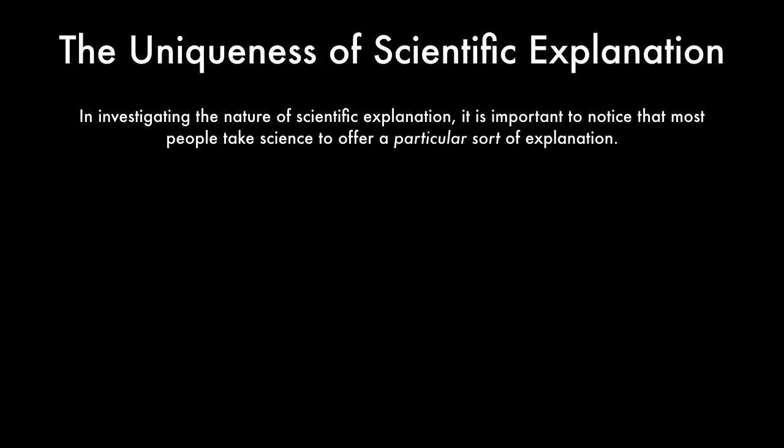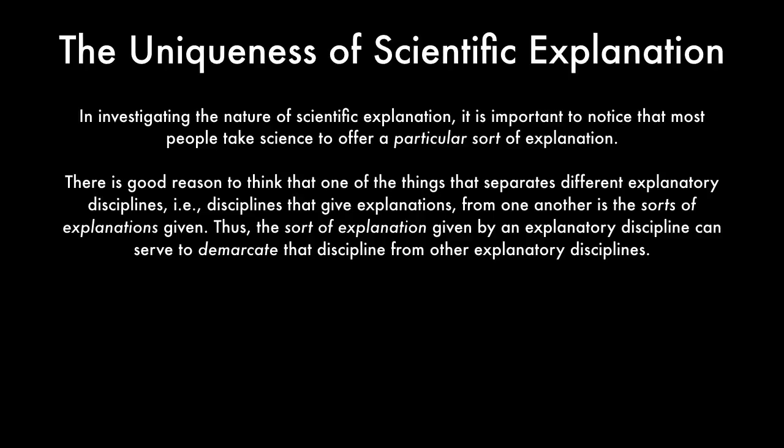In investigating the nature of scientific explanation, it's important to notice that most people take science to offer a particular sort of explanation. There's good reason to think that one of the things that separates different explanatory disciplines — that is, disciplines that give explanations from one another — is the sorts of explanations given. Thus, the sort of explanation given by an explanatory discipline can serve to demarcate that discipline from other explanatory disciplines.